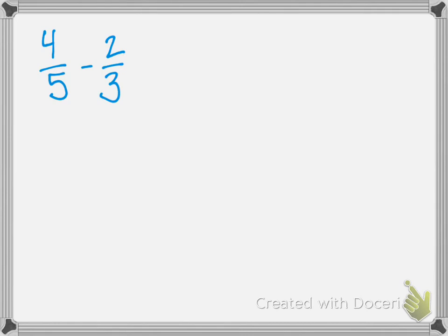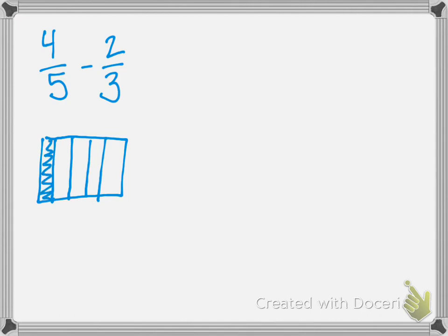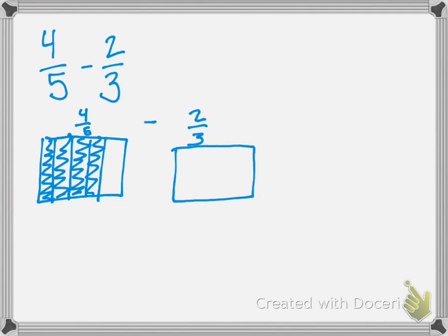Step 1 is we draw the first fraction. We'll give it vertical lines, make our 5 sections, and color in 4 of them — 1, 2, 3, 4. And then we're going to draw our 2 thirds. So this is our 4 fifths minus 2 thirds. We draw our thirds and color in 2 of them because our numerator is 2. In a moment we're going to give the other lines to the other shape.